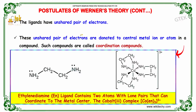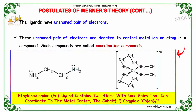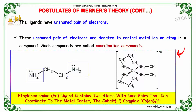The ligands have unshared pairs of electrons. These unshared pairs of electrons are donated to the central metal ion or atom in a compound, and such a compound is called a coordination compound. For example, the ethylene diamine ligand contains two atoms with a lone pair that can coordinate to the metal center, as you are able to see here, combining to form a cobalt complex ion.